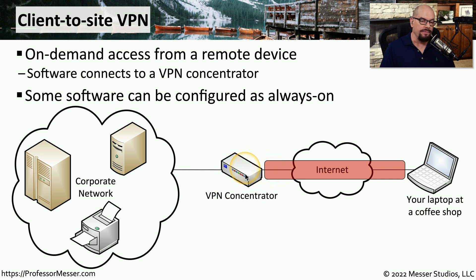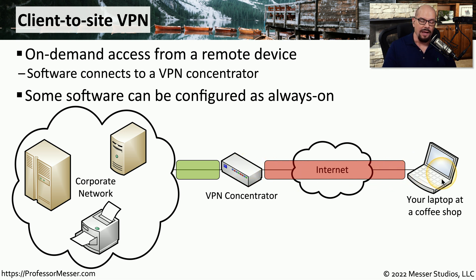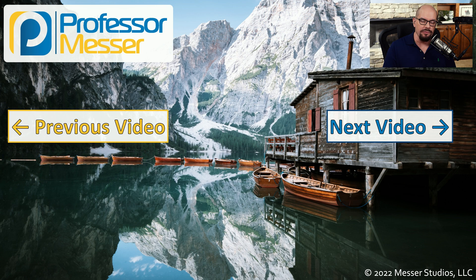At this point, the VPN concentrator receives that encrypted information, decrypts the data, and sends that information into the corporate network. Any device that needs to send information back to the laptop will send it to the VPN concentrator. The concentrator will encrypt that data, send it over the encrypted tunnel, and when it reaches your laptop, the laptop will decrypt it so it can be used locally. This entire process happens behind the scenes and is automatic when you enable your VPN software.